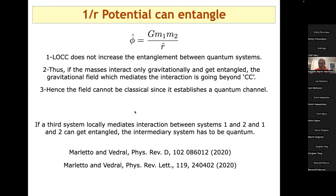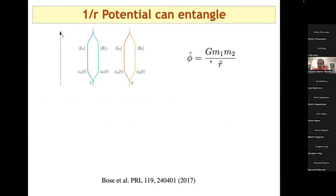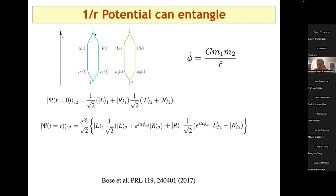A follow-up question asks how one sees entanglement in the final state. The speaker explains: you start with a separable product state, evolve it under the Newtonian gravitational potential, and the resulting state is not separable — it cannot be written as a product of system one and system two. It's a sum of two products. The calculation is just time-ordered exponential evolution under the Newtonian Hamiltonian.